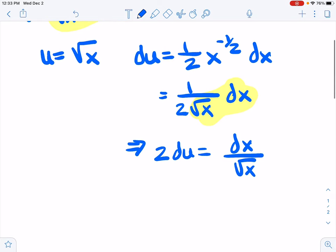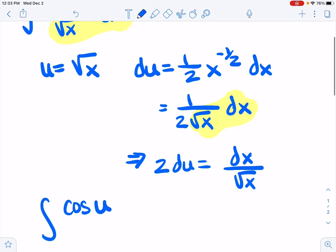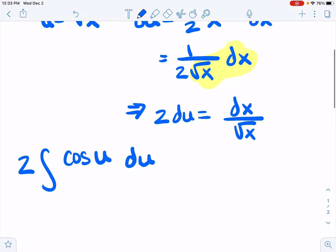And that'll allow us to plug right in. We end up with the cosine of the square root of x, so cosine of u. We have dx over root of x is 2 du. So there it is.